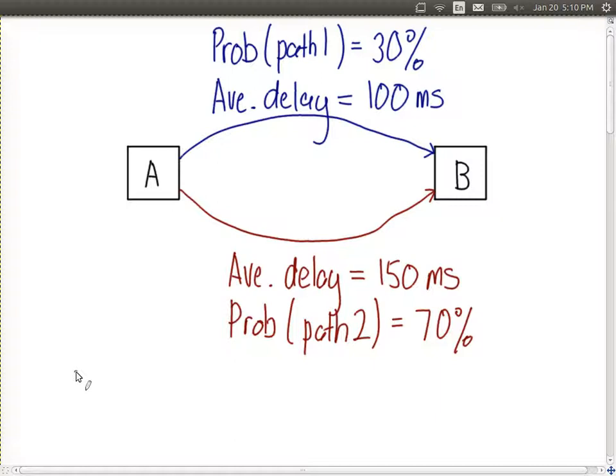So in this system we have the event of sending packets via path 1. We know the expected value of the delay for that event, 100 milliseconds. And we know the probability of that event occurring, 0.3 or 30%, and similar for path 2.